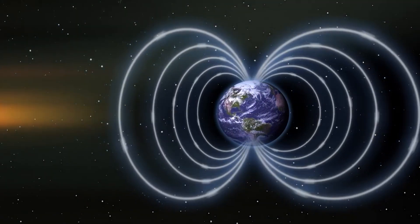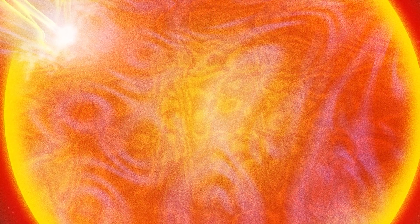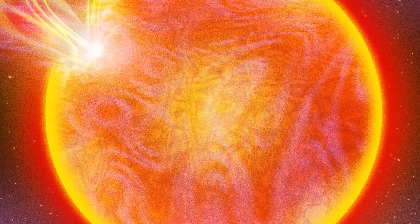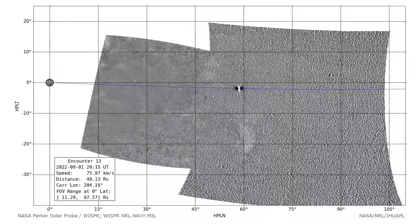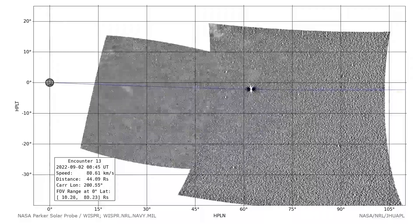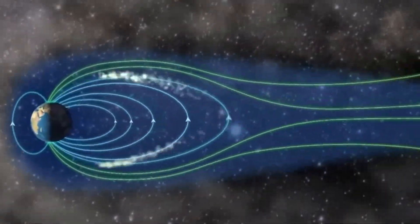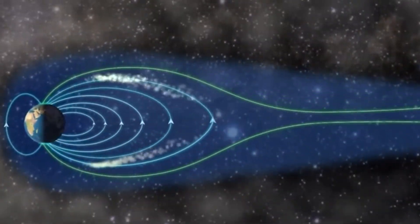So, what caused this crack? It happened because of something rare called a co-rotating interaction region, CIR, from the Sun. These are big plasma structures made when fast and slow solar winds mix in the heliosphere around the Sun. This heliosphere includes the Sun's magnetic field and the winds it sends out.